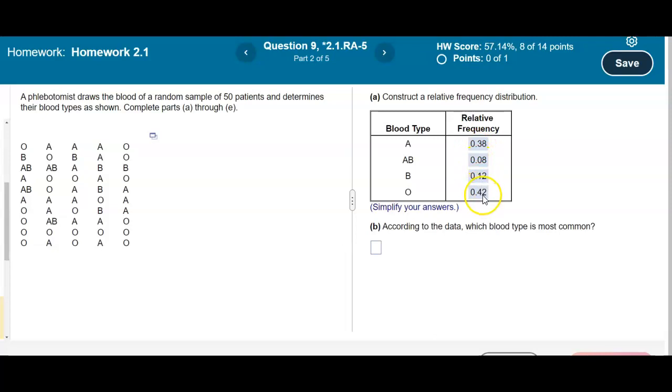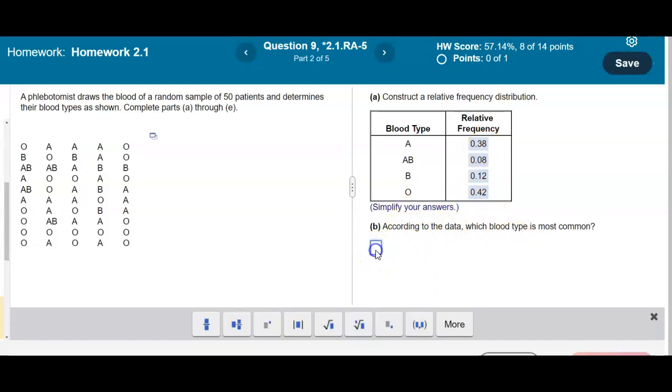Well you can see here that 0.42 is the same thing as 42%. That represents the highest. So therefore the blood type is going to be O.